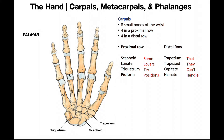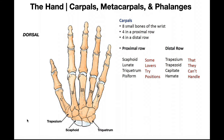That's the palmar surface of the hand. We can now go to the dorsal side, and it's really the same thing, except we can't see the pisiform. So right here: scaphoid, lunate, triquetrum with pisiform on the other side, trapezium, trapezoid, capitate, and hamate.